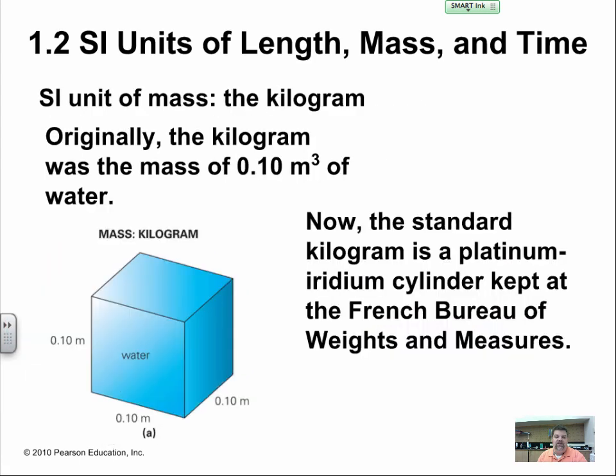The SI unit for mass is the kilogram. Originally the kilogram was a mass of 0.10 meters cubed of water, which is about 1,000 milliliters of water. Now the standard kilogram is a platinum iridium cylinder kept at the French Bureau of Weights of Measure.